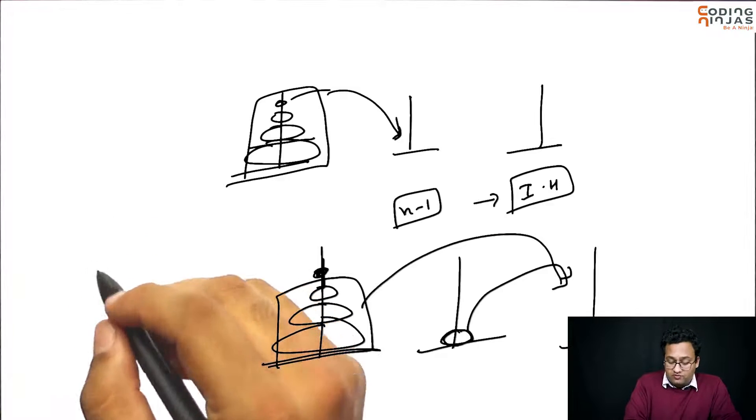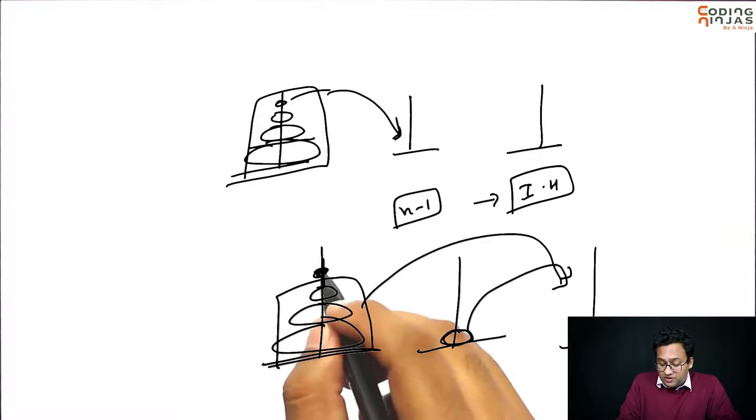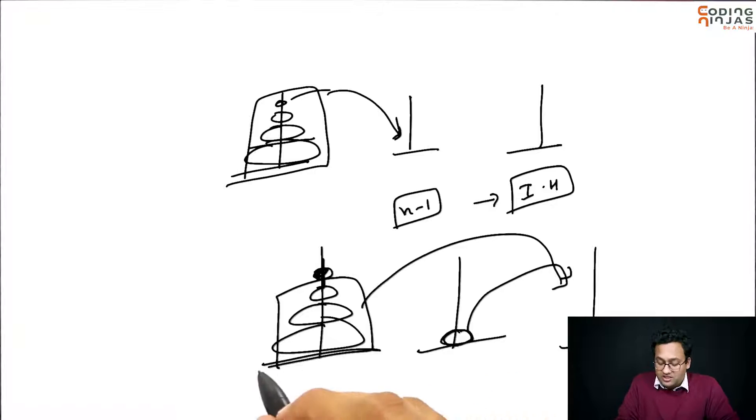So, move these n minus 1 to the destination and then you can put this one on top. What am I saying? First move the smallest one to the helper, then rest n minus 1, you can take it here using induction hypothesis and then move this small one to the top.